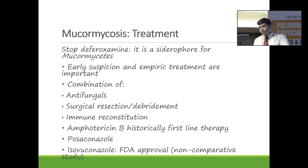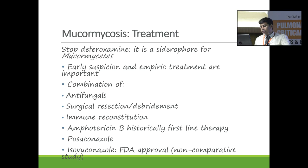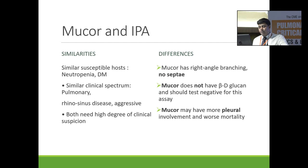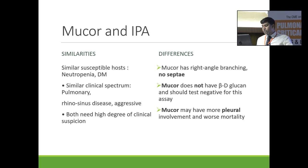For treatment of Mucormycosis, stop iron chelation therapy as it is a major risk factor. Early suspicion and empiric treatment are very important. Give combination antifungals, consider surgical resection as early as possible. AmphoB is historically the first-line therapy. Posaconazole and Isavuconazole are now alternatives when AmphoB cannot be given. Differentiating Mucor from IPA: Mucor branches at right angles and is pauci-septate, beta-D-glucan is negative, has more pleural involvement, and carries worse mortality.